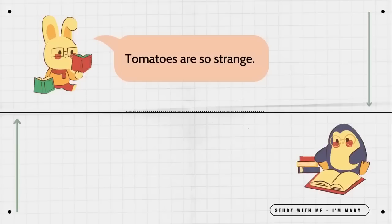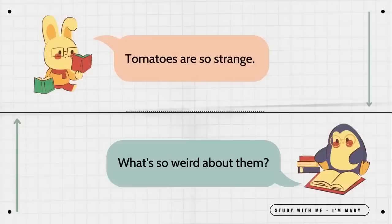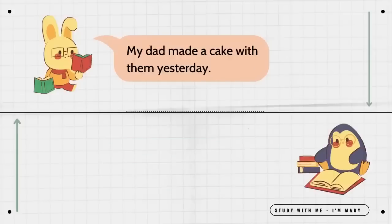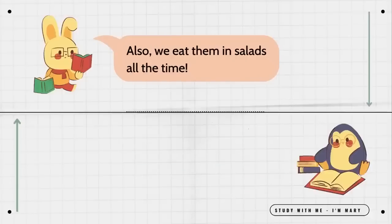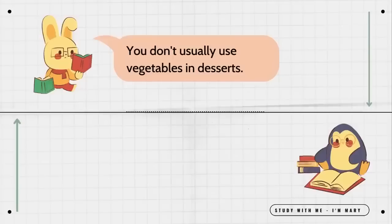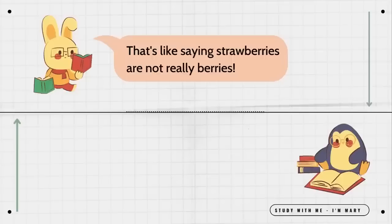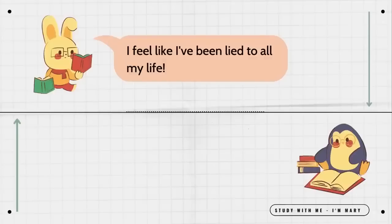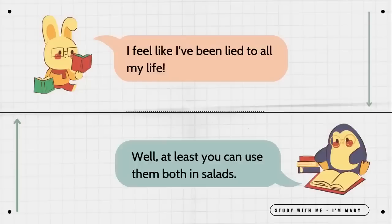Tomatoes are so strange. What's so weird about them? My dad made a cake with them yesterday. That's a little unusual I guess. Also we eat them in salads all the time. Why is this so amazing? You don't usually use vegetables in desserts. Tomatoes are a fruit. That's like saying strawberries are not really berries. Actually they're not. I feel like I've been lied to all my life. Well, at least you can use them both in salads.